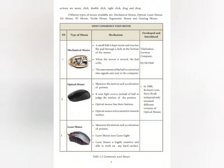Mechanical mouse. It was developed by Telefunken, a German company, in 1968. Mechanical mouse has a small ball kept inside that touches the pad through a hole at the bottom of the mouse. When the mouse is moved, the ball rolls. This movement of the ball is converted into signals and sent to the computer.